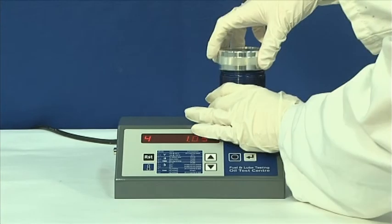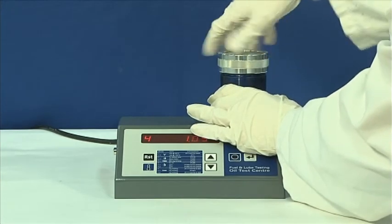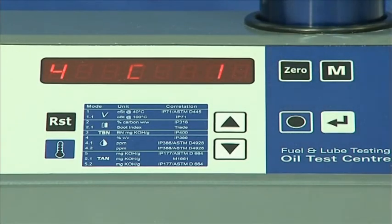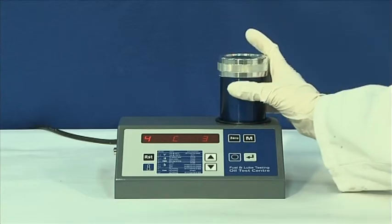Now replace the cap tightly and wait until the reading has stabilized. Press the button marked zero to reset the reading and start the count. Remove the cell and shake it for two minutes, then replace it on the unit.